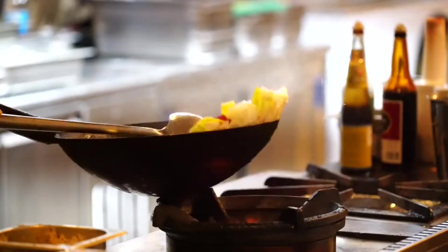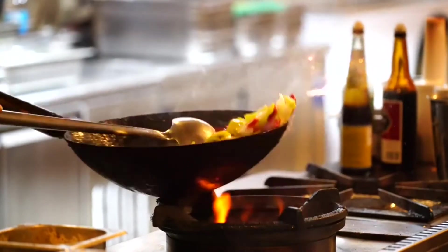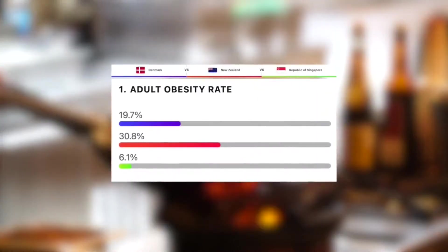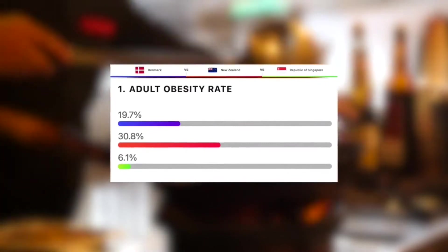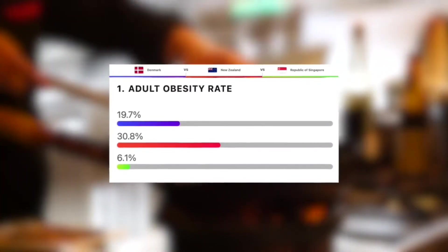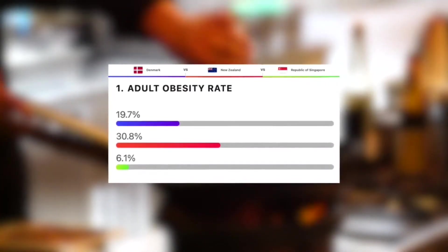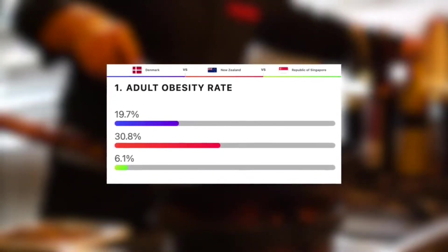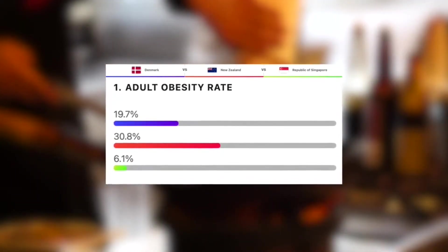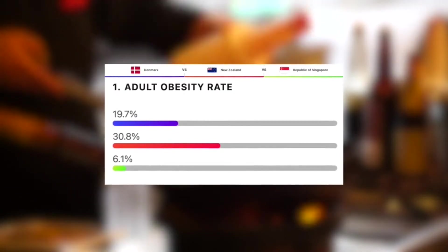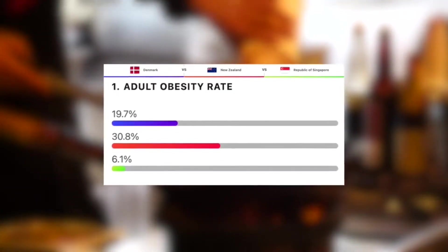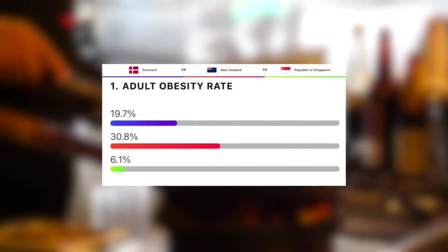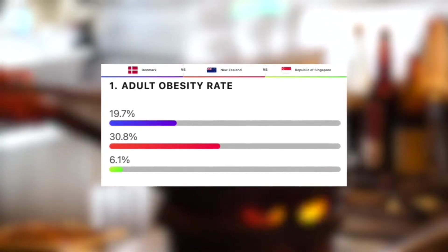When it comes to adult obesity rates, this is one that Singapore does take the win. At just over 6% of the adult population being classed as obese, they have by far the lowest obesity rates out of the three. Next we have Denmark at just under 20%, or one-fifth of the adult population. And then finally, at an astonishing just under 31%, we have New Zealand, who are by far the most obese out of the three.